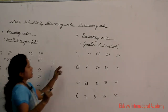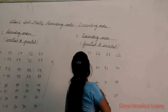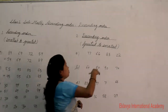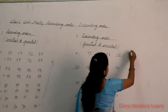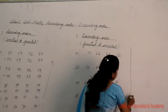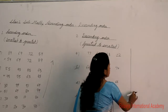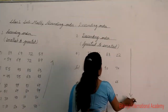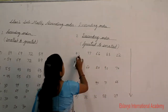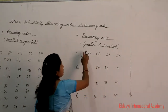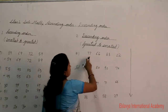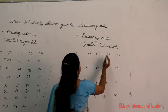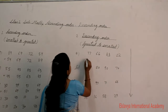Now let's move to descending order — greatest to smallest. In descending order we choose the highest number first and go to the smallest. For example: 77, 66, 88, and 22. The biggest number is 88.